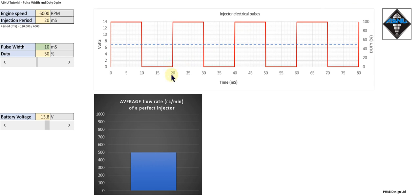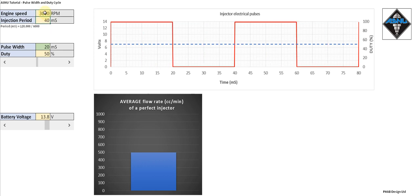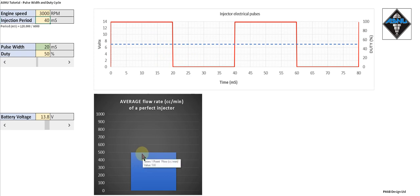We're pulsing the injector every 20 milliseconds. But if I now change the engine speed to 3000 RPM, we're pulsing the injector every 40 milliseconds — so much slower. But the duty cycle has remained at 50 percent, and the flow has remained at 50 percent.